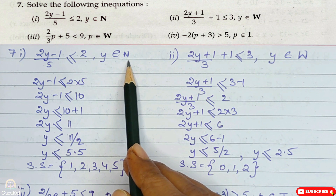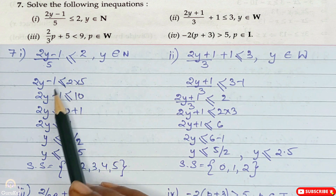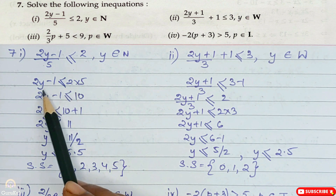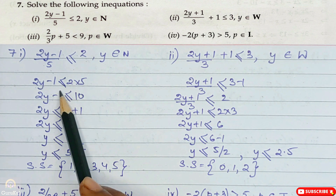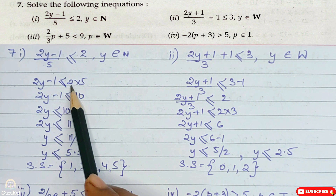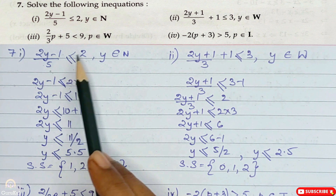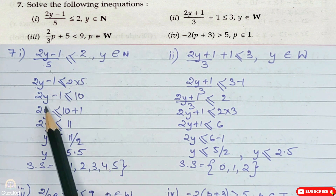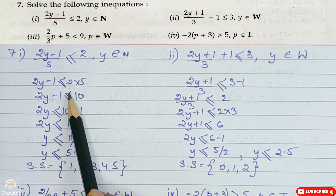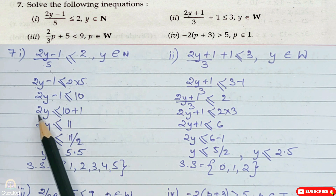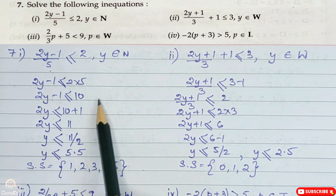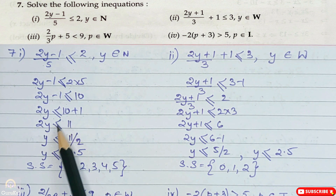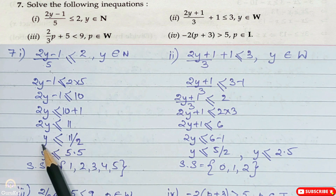Natural means starting from 1. So we will cross multiply. So 2y minus 1 less than or equal to 2 into 5 — the 5 in the denominator was cross multiplied. So 2y minus 1 less than or equal to 10. So 2y less than or equal to 10 plus 1. Sign got changed. Now 2y less than or equal to 11. Hence y is less than or equal to 11 by 2.